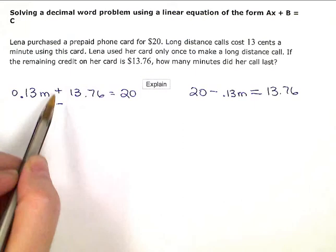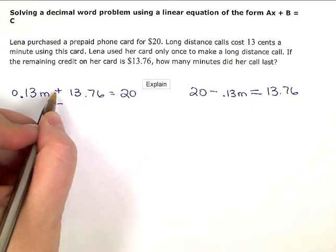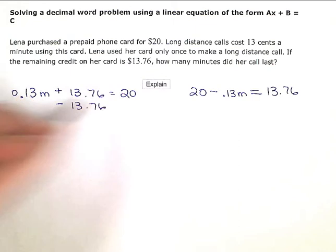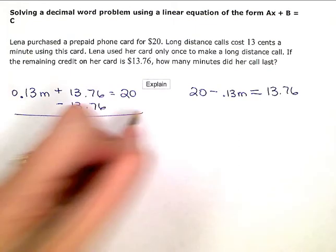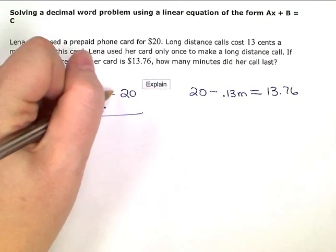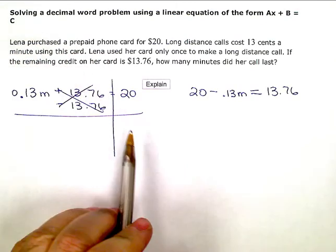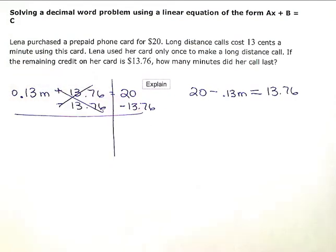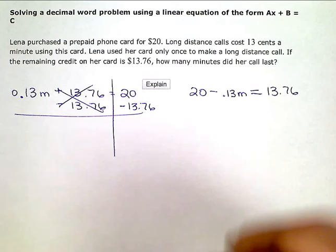the opposite of plus $13.76 would be minus $13.76. So I'm going to zero this one out or get rid of it. But to keep my equation balanced, I also have to subtract $13.76 from the right side.